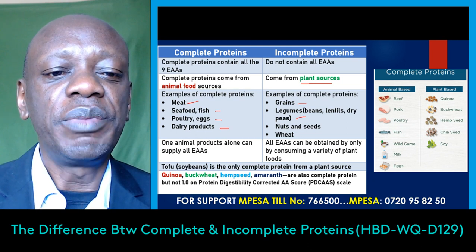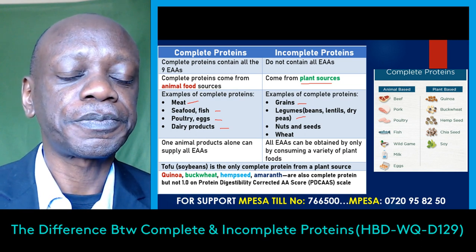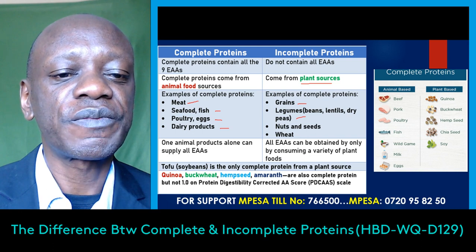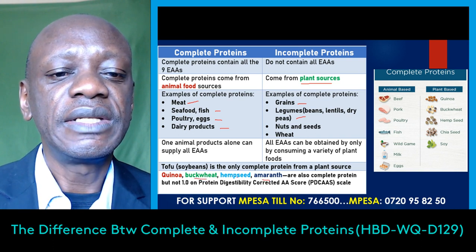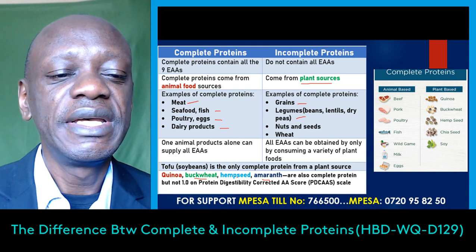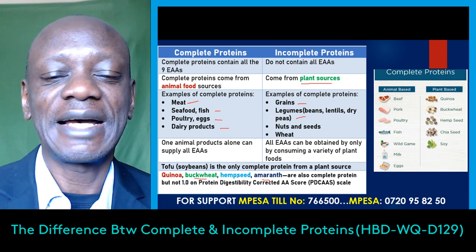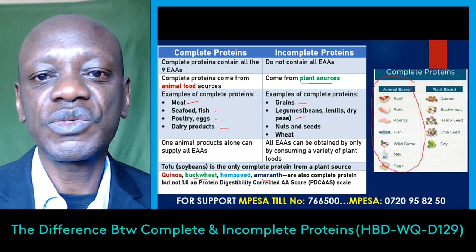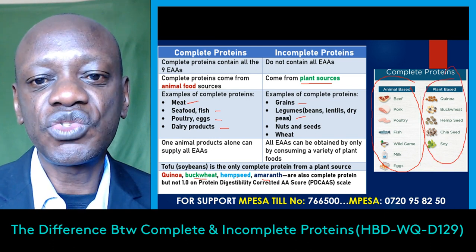For incomplete proteins, all the essential amino acids can be obtained by consuming a variety of plant sources in the diet. There is one exception to this rule: soybeans are the only complete protein from a plant source. You may also have heard about quinoa, buckwheat, hemp seed, and amaranth — these are also considered complete proteins; however, on the protein digestibility corrected amino acid score (PDCAAS) scale, these four do not score 1.0, though they are still considered complete proteins.